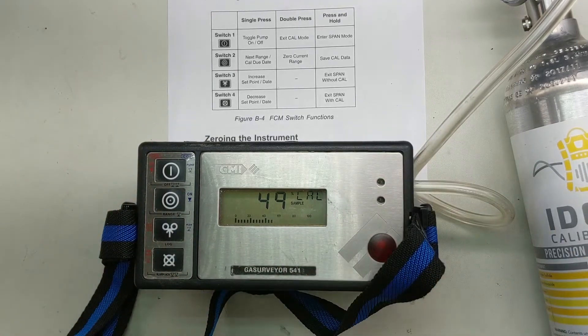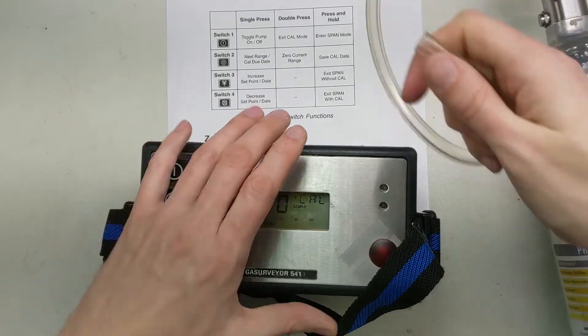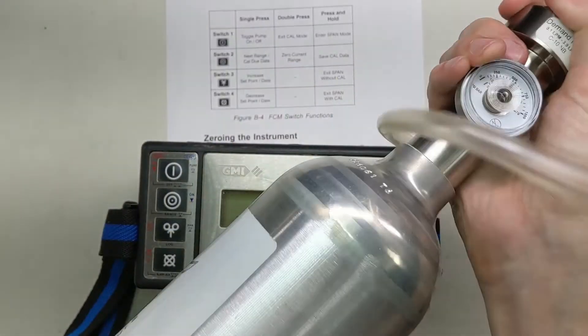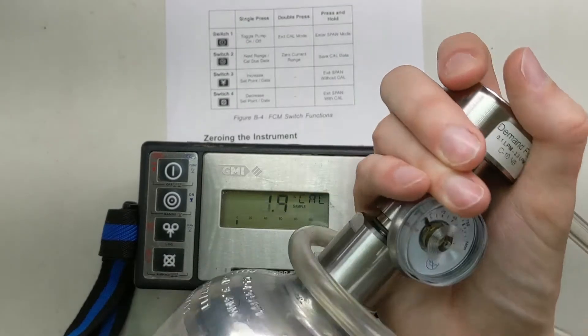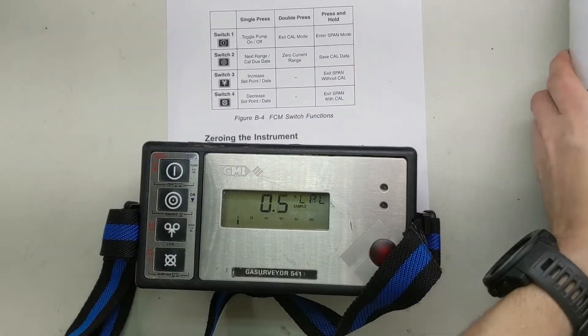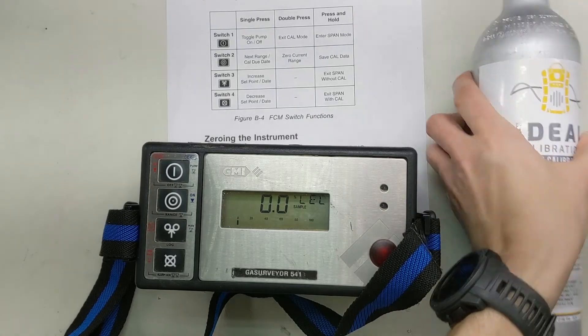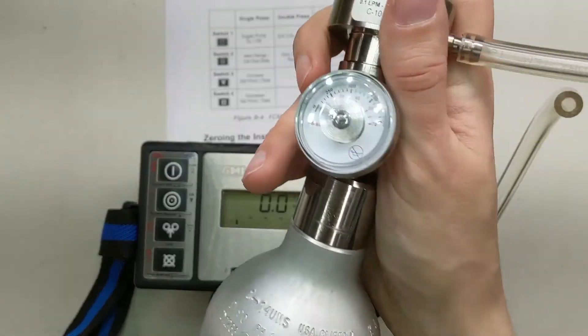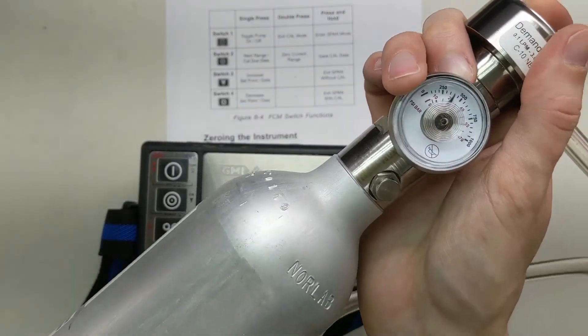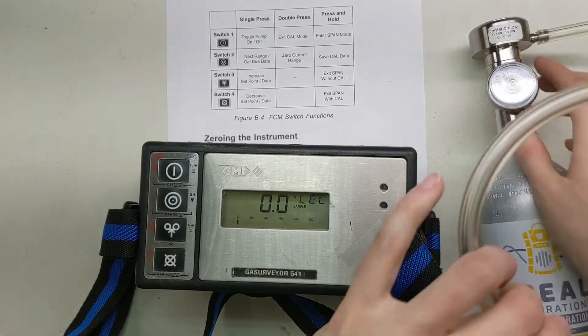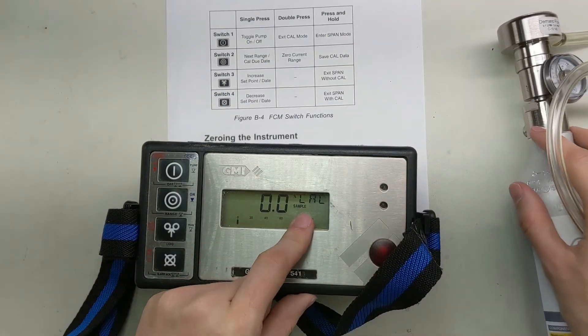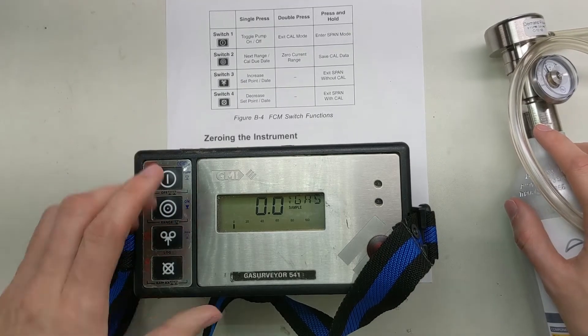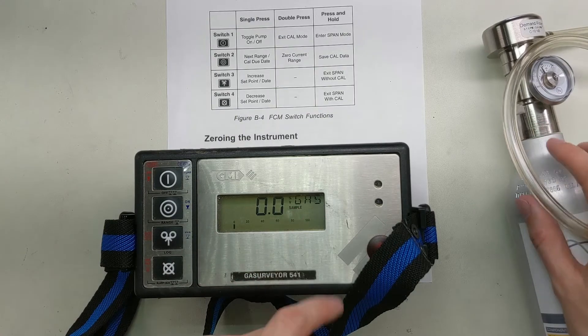Now we're going to move to the next cylinder. We're going to pop this off here. And now we're going to bring in the methane, UHP methane 99.97. Screw it in. Now it's in LEL mode right now. So what we want to do is we want to get one button more. Now it's got the V for volume, volume gas. Perfect. That's what we need.